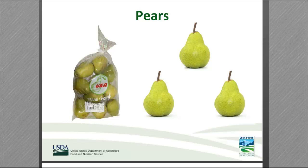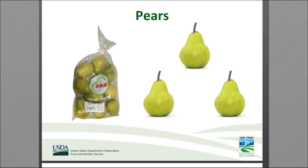Another common defect on pears is brown to black surface discoloration on the skin. Like apples, pears have different firmness levels. When they are green, they are hard; then they go from light green to yellowish green — that would be firm. Yellowish green to yellow is firm ripe. Yellow is a good indication that the fruit is ripe.